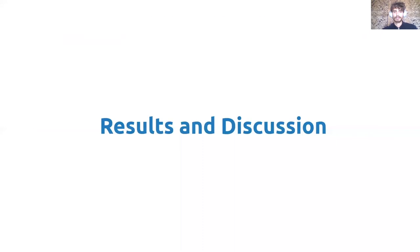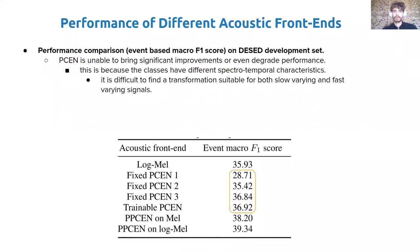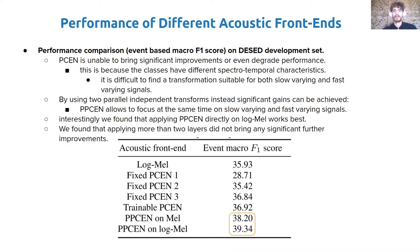Let's see the results. Here, we compare performance in terms of event-based F1 score on the SED development set for different acoustic frontends. Per-channel energy normalization alone is unable to bring significant improvements and can also degrade performance. This is because the classes have different spectro-temporal characteristics, and it is difficult to find a single transformation suitable for both slow-varying and fast-varying signals. By using two parallel independent transforms instead, significant gains can be achieved, as the frontend can focus simultaneously on slow-varying and fast-varying signals. Interestingly, we found that applying parallel per-channel energy normalization directly on log-mels works best. Applying more than two layers did not bring any significant further improvement.